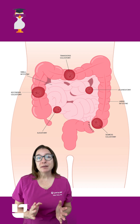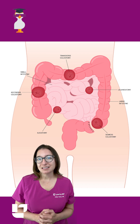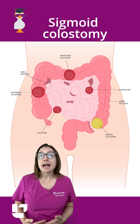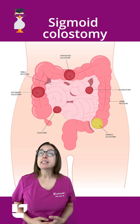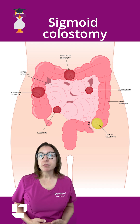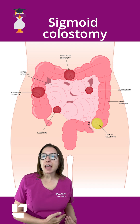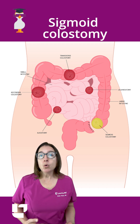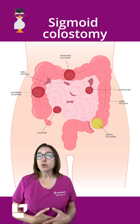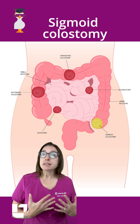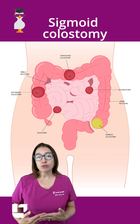Let's talk about some different types of ostomies. A sigmoid colostomy is created out of the last part of the colon, which is the sigmoid colon. The stoma for this type of colostomy is located on the left side of the abdomen. Colostomy output will resemble normal bowel movements — typically solid and may be soft or firm.